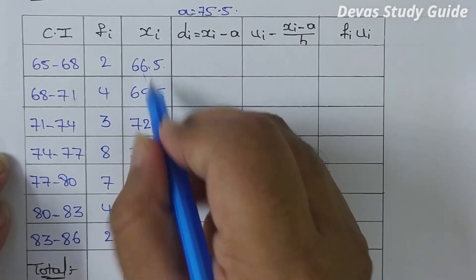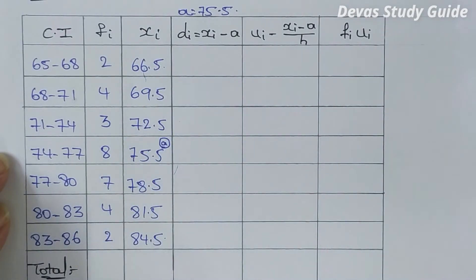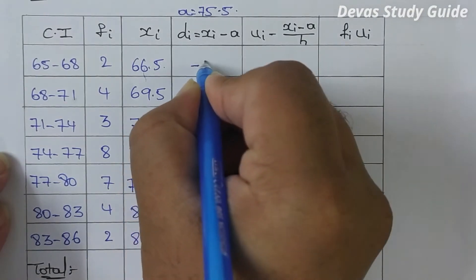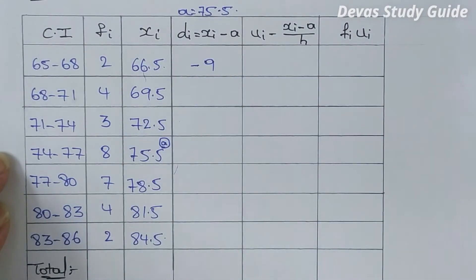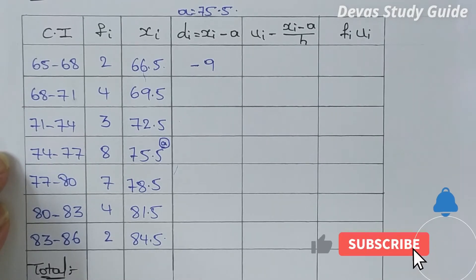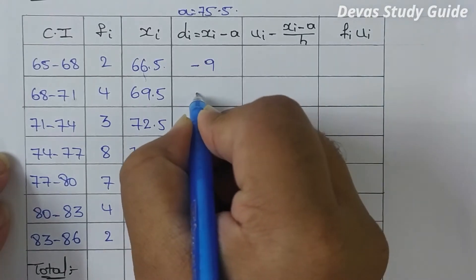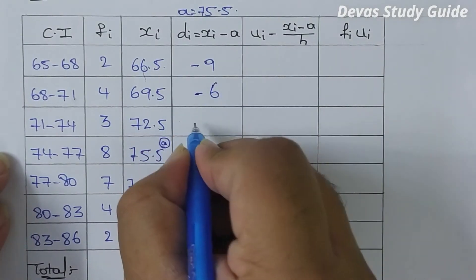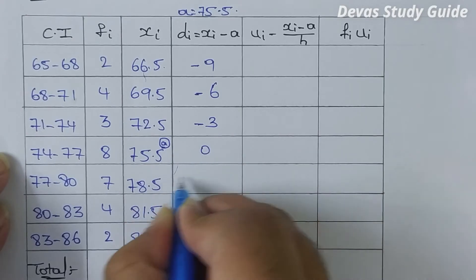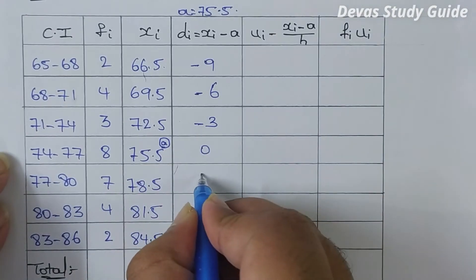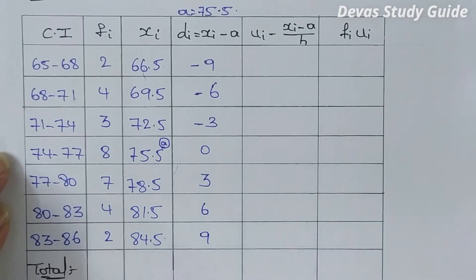Now computing di values: 66.5 minus 75.5 is equal to minus 9. Next, 69.5 minus 75.5 is equal to minus 6. The difference is 3, so minus 3. Then 0. Next, adding gives 3 and 6 and 9.